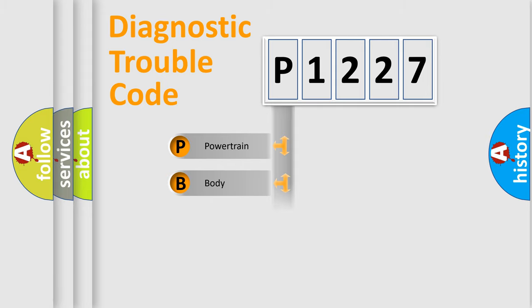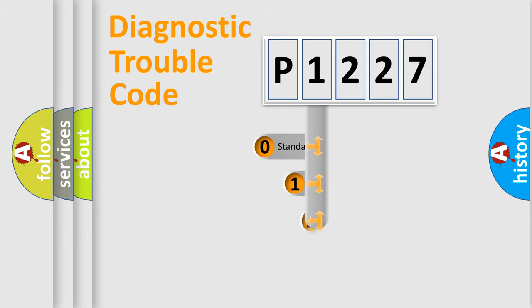Powertrain, Body, Chassis, Network. This distribution is defined in the first character code.